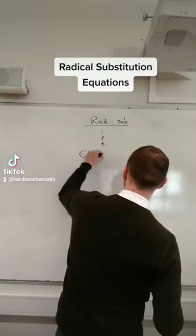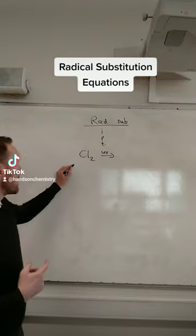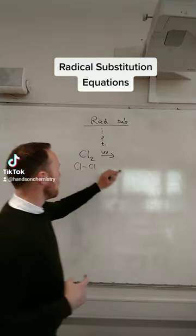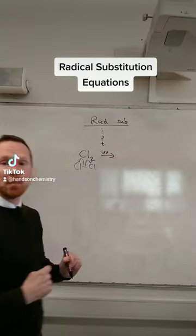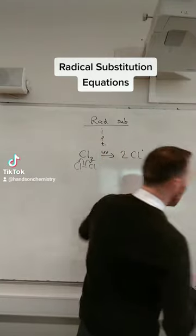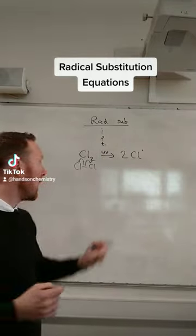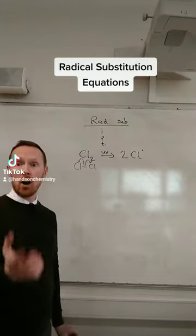And you've got to understand what ultraviolet light does. Well, it breaks this chlorine bond, but it breaks it in a way where one electron goes to each chlorine atom. We call that homolytic fission. Homolytic means you form the same - you form two radicals, homolytic fission.